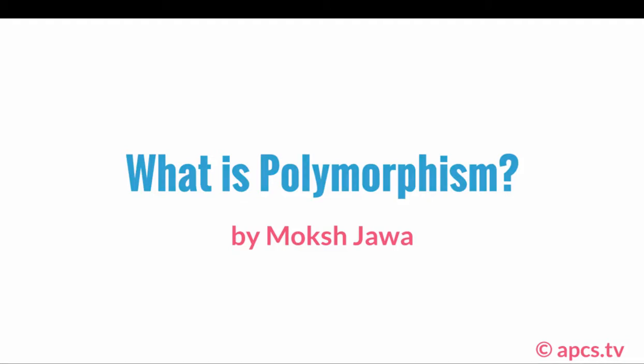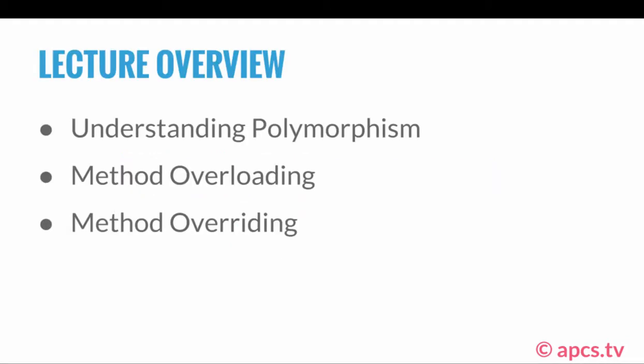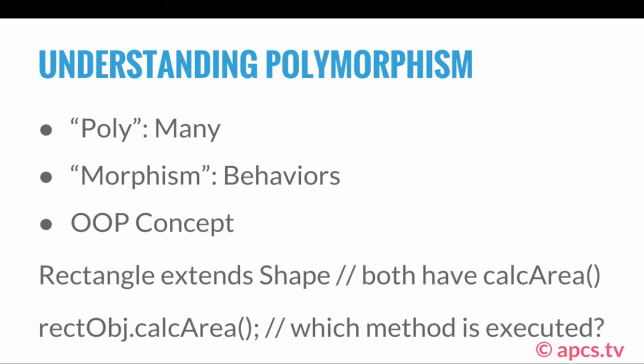Welcome to 'What is Polymorphism?' In this lecture, we take a look at a couple of things. First of all, we understand exactly what polymorphism is. Then we look at two examples of polymorphism: method overloading and method overriding. So let's start off by understanding exactly what polymorphism is.